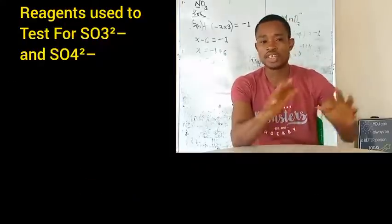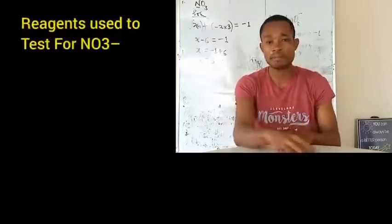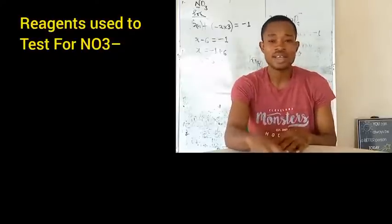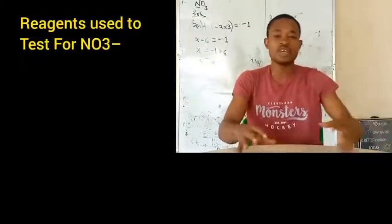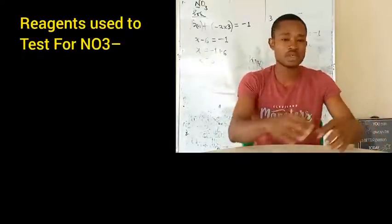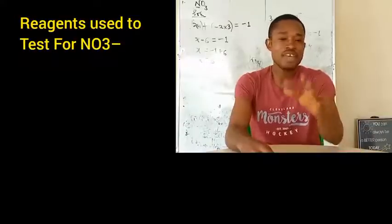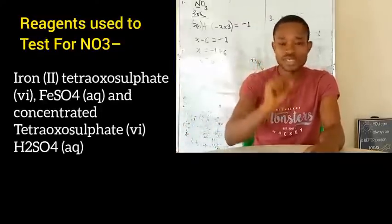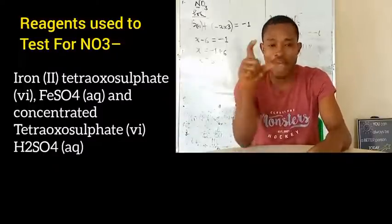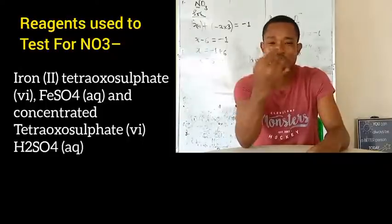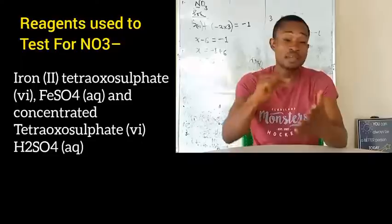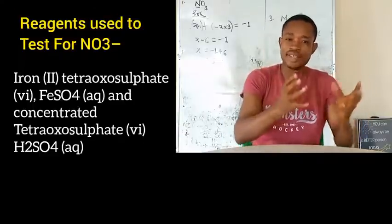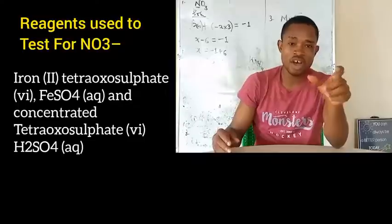Let us now conclude the negative ions by talking about NO₃⁻, trioxonitrate(V) ion. What is the reagent used for testing for this ion? The NO₃⁻ anion makes use of the reagents tetraoxosulfate(VI) acid and iron(II) tetraoxosulfate(VI). The observation is that you will see a brown ring formed in the test tube.